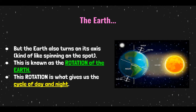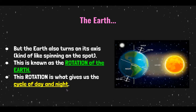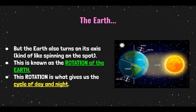The rotation is what's responsible for the cycle of day and night. So the revolution — which is the Earth traveling around the sun — that's what gives us the seasons. And the rotation on the spot is what gives us day and night.